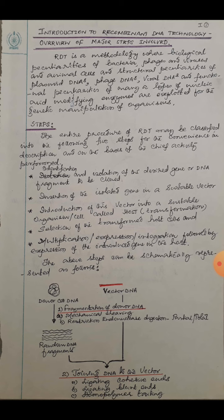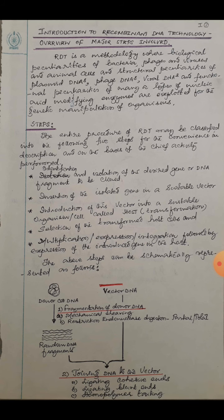Then, once the screening is over, you will select those particular host cells which carry the gene of your choice, and then you have to multiply, or express the gene, or integrate it, followed by expression of the introduced gene in the host. Whether you multiply, express, or integrate it depends upon your purpose of work. So these are the basic steps: identification and isolation of desired gene, insertion into a suitable vector, introduction into a suitable host, selection of transformed host cells, and further multiplication, expression, or integration depending upon your purpose.